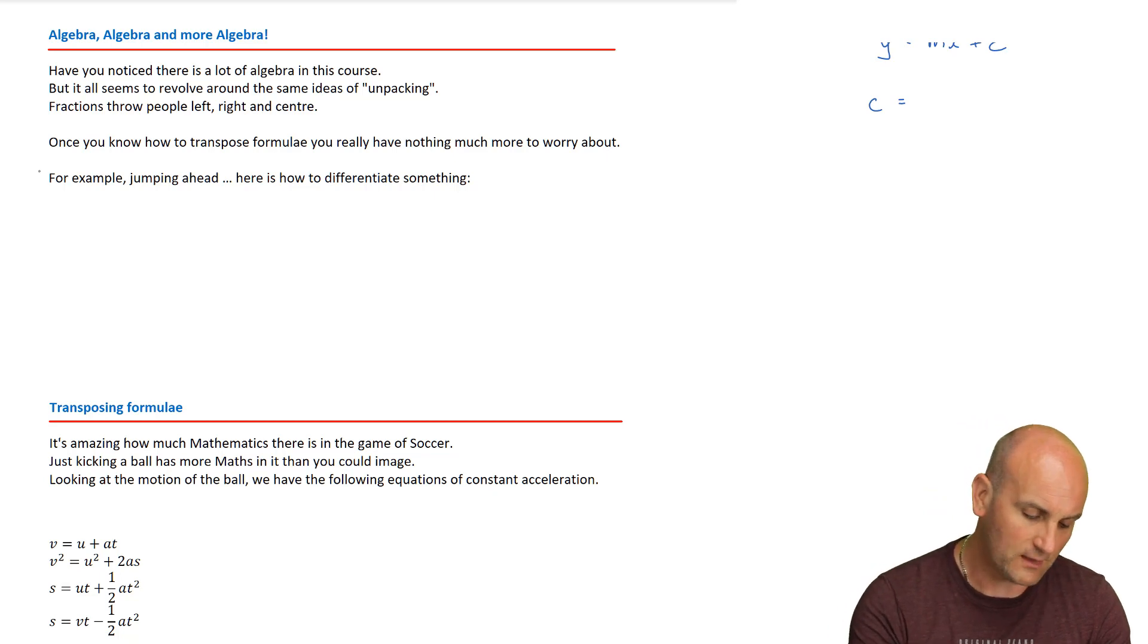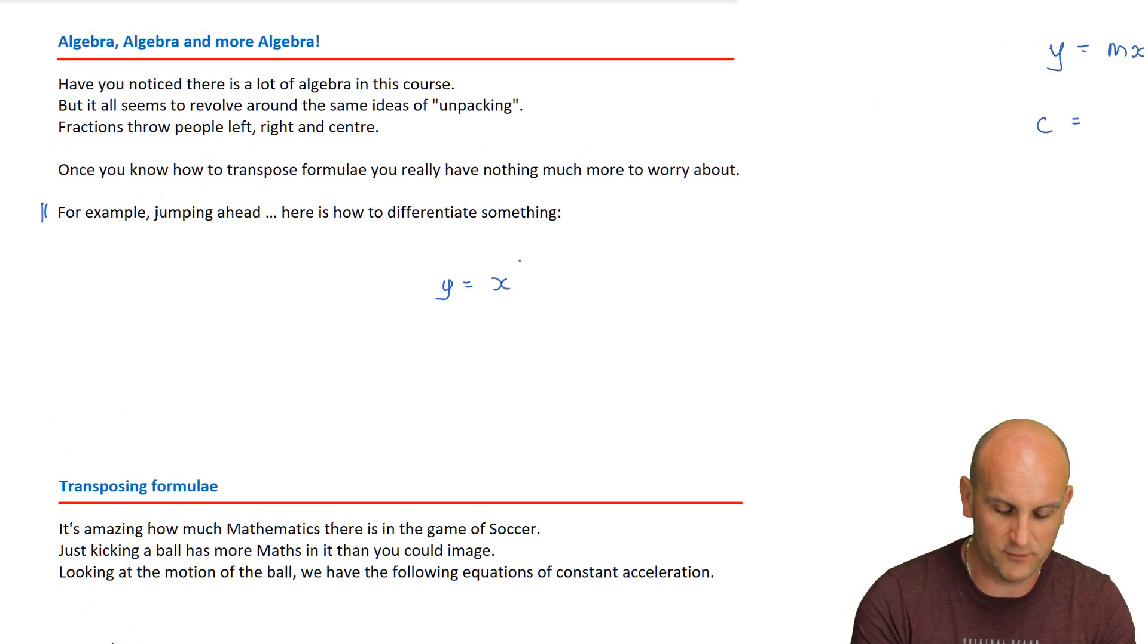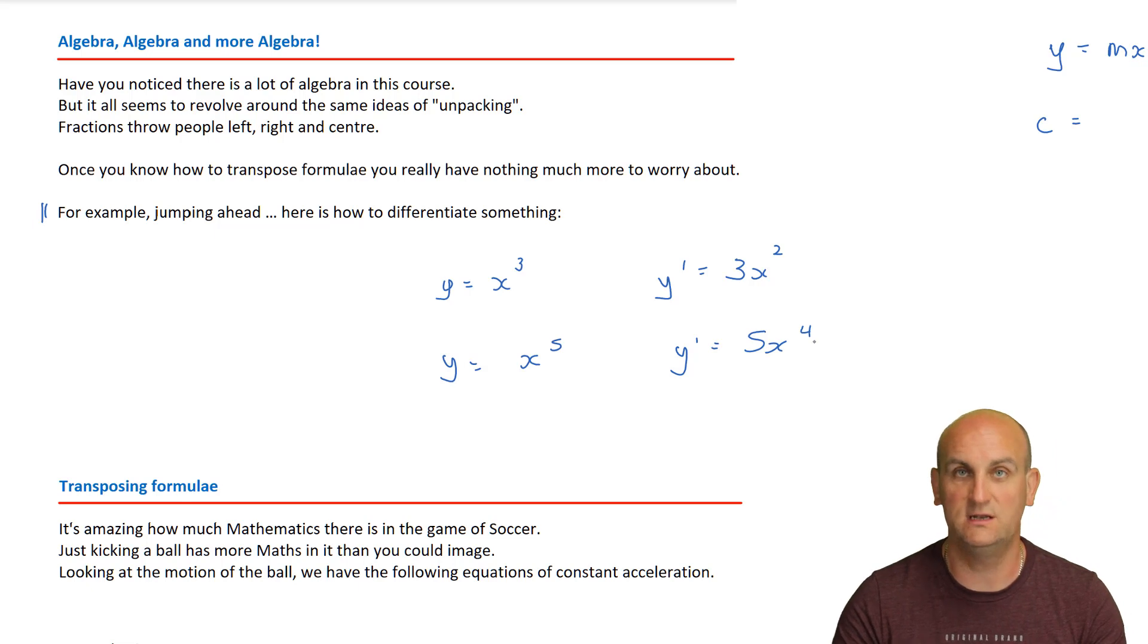So, for example, I've got one here. And we do a subject much, much later in the year called differentiation. And when we differentiate something, we have a function, we have a graph that might be Y equals X cubed. And when we differentiate it, we just simply write Y dashed is equal to, we bring the floaty number down, and then we take one off the floaty number. Literally it. So if I had Y was equal to X to the power of five, then Y dashed is equal to five X to the power of four. See what I did? I took the floaty number, moved it down, and subtracted one from the floaty number.